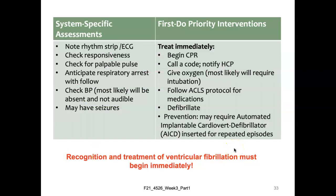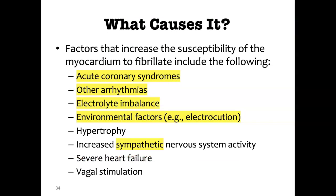System-specific assessment for V-fib: take a quick note of the ECG, check responsiveness, check for a pulse, anticipate respiratory arrest, check blood pressure — most likely absent with no cardiac output. The patient may have seizures. Begin CPR immediately, call a code, notify the healthcare practitioner, give oxygen. The patient will likely require intubation. Follow ACLS protocol for medications and defibrillate. The patient may require an AICD if they recover. Recognition and treatment of V-fib must begin immediately. Causes include acute coronary syndromes, other arrhythmias, electrolyte imbalance, environmental factors such as electrocution, and increased sympathetic nervous system activity.